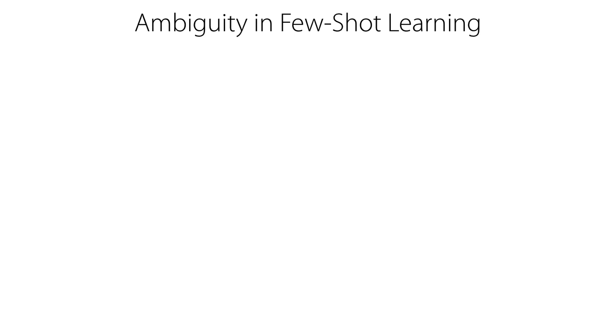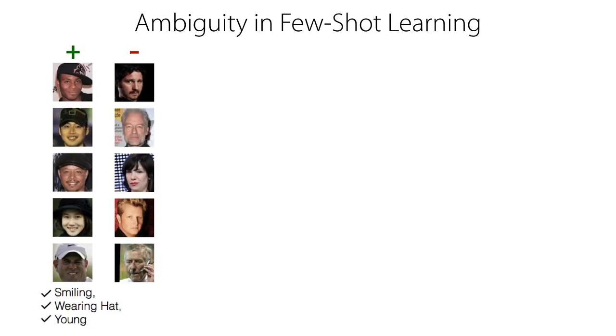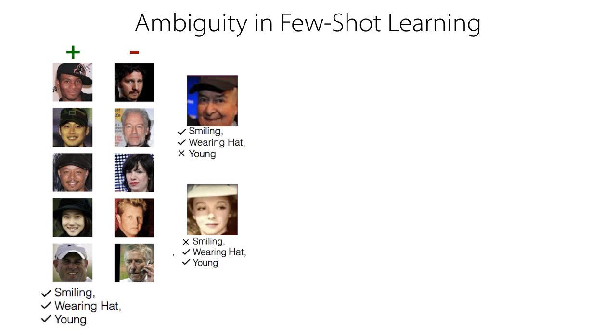One challenge that arises in few-shot learning is that of handling ambiguity. For example, suppose we are given the images on the left as training data for a binary classifier. When given new query images with only two of the attributes, it is unclear what the correct label is. The data is ambiguous.